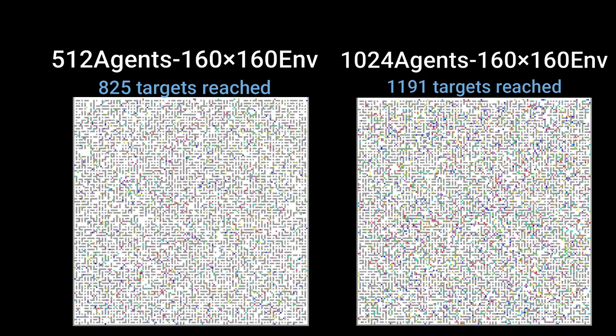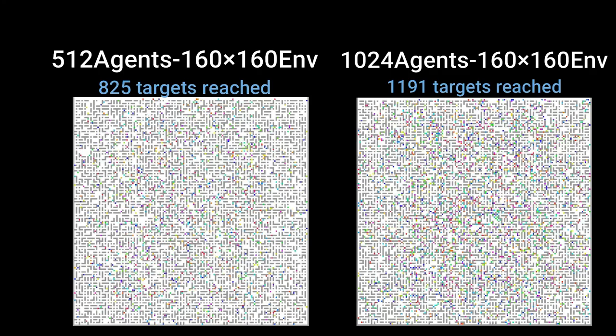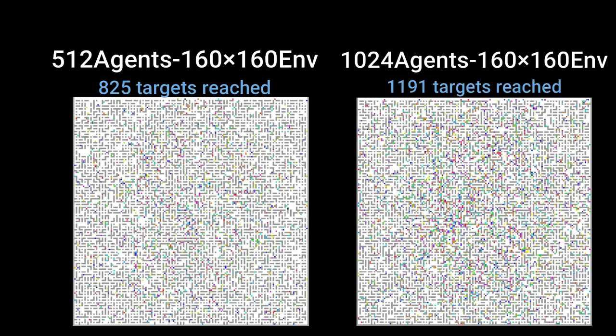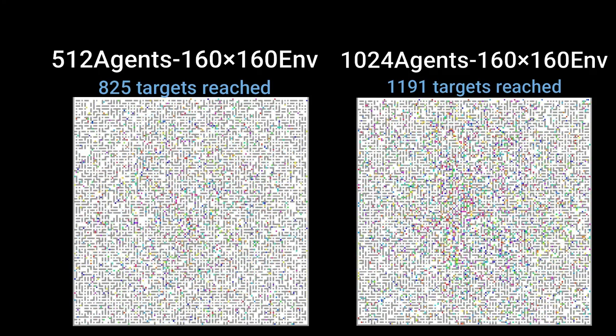We also tried larger world size and more agents. Primal 2 is tested to work up to 1024 agents and 160 by 160 size world.